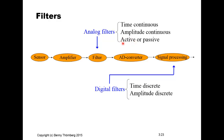Active analog filters are built from active components — operational amplifiers. Passive filters are built from only passive components such as resistors, capacitors, and inductors. The signal processing is usually implemented in a signal processor, microcontroller, or programmable logic.